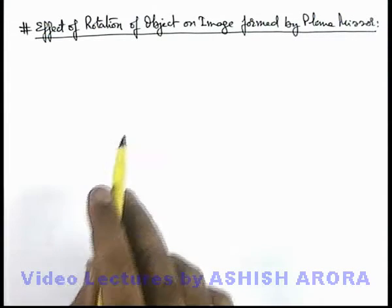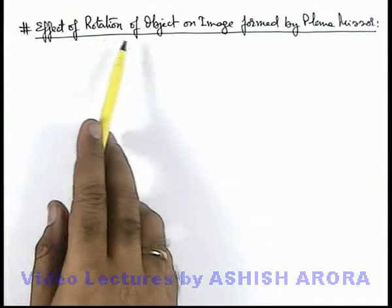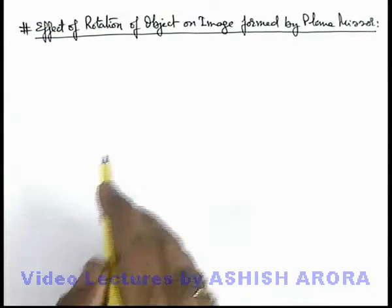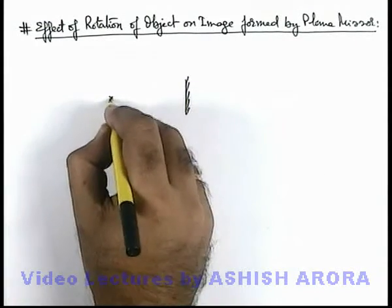Now we'll study another important property of image formation by plane mirror, that is the effect of rotation of object on image formed by a plane mirror. Say we are given a plane mirror in front of which an object is placed.